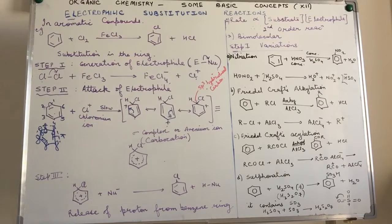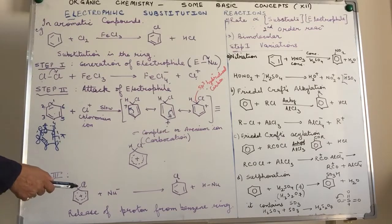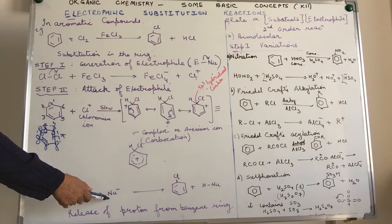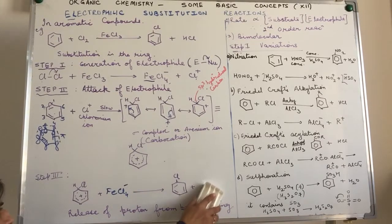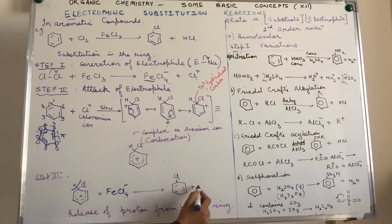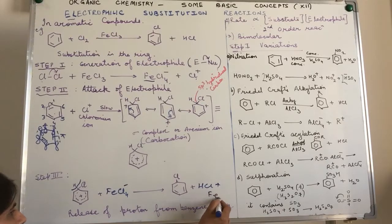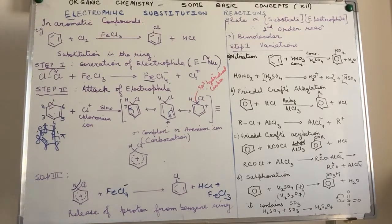This will be highly unstable with a tendency to lose its positive charge. Step three involves the loss of a proton from the arenium ion in the presence of the nucleophile. Our nucleophile in this case is FeCl4-, generated in the first step. It will take the proton from the benzene ring, giving HCl as a by-product. If you notice, FeCl3 is regenerating.